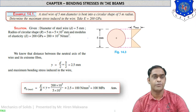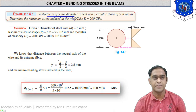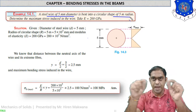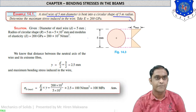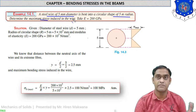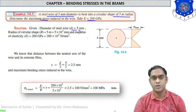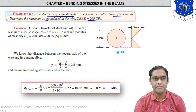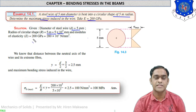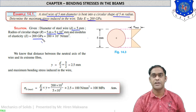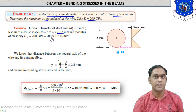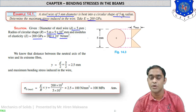Example 14.1: A steel wire of 5 mm diameter is bent into a circular shape of 5 meter radius. We have to determine the maximum bending stress induced in the wire due to this bending. The data: d = 5 mm, radius R = 5 m = 5×10³ mm, modulus of elasticity E = 200 GPa = 200×10³ N/mm².